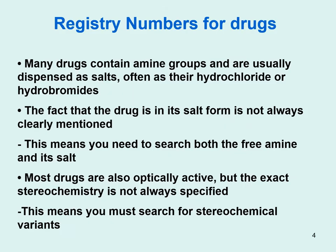On this slide and the next I am looking at registry numbers for drugs. Many drugs have amine groups. Amines by themselves are not that stable — if you ever prepared aniline, that nice light yellow color when you first prepare it turns brown; amines oxidize. That's why most drugs that contain amines are usually dispensed as salts, usually the hydrochloride or hydrobromide salts. The problem is that when drugs are mentioned in the literature, the fact that the salt version is being dispensed is not always clearly mentioned — sometimes just the name of the drug is given without specifying that it is a salt.